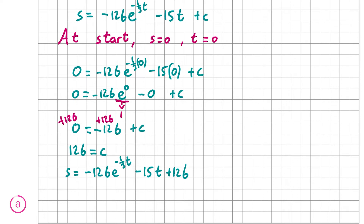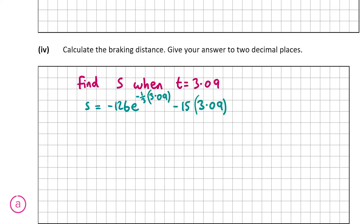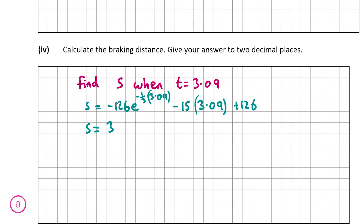That's our answer for A, Part 3. Now A, Part 4 wants us to calculate the braking distance, correct to two decimal places. We know the time to stop is 3.09 seconds, so we find s when t = 3.09: s = −126e^(−3.09/3) − 15(3.09) + 126. Popping this into the calculator gives s = 34.66712297, which is 34.67 meters correct to two decimal places.